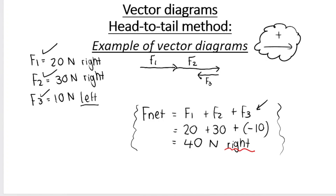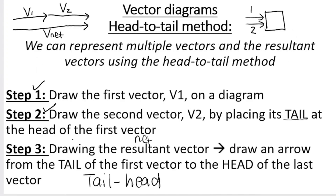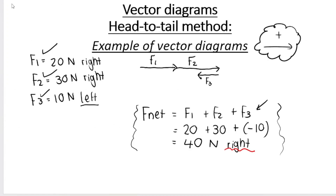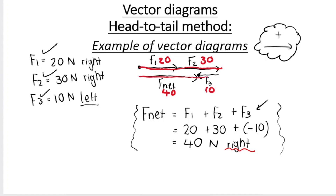To draw the resultant vector, remember the rule: draw it from the tail of the first to the head of the last. The net vector starts at the tail of F1 and points towards the head of F3. We work this out using vector addition: F1 is 20N, F2 is 30N, and F3 is 10N to the left — so F net is 40 Newton. The total length of F1 plus F2 represents 50N, which confirms our diagram makes sense.